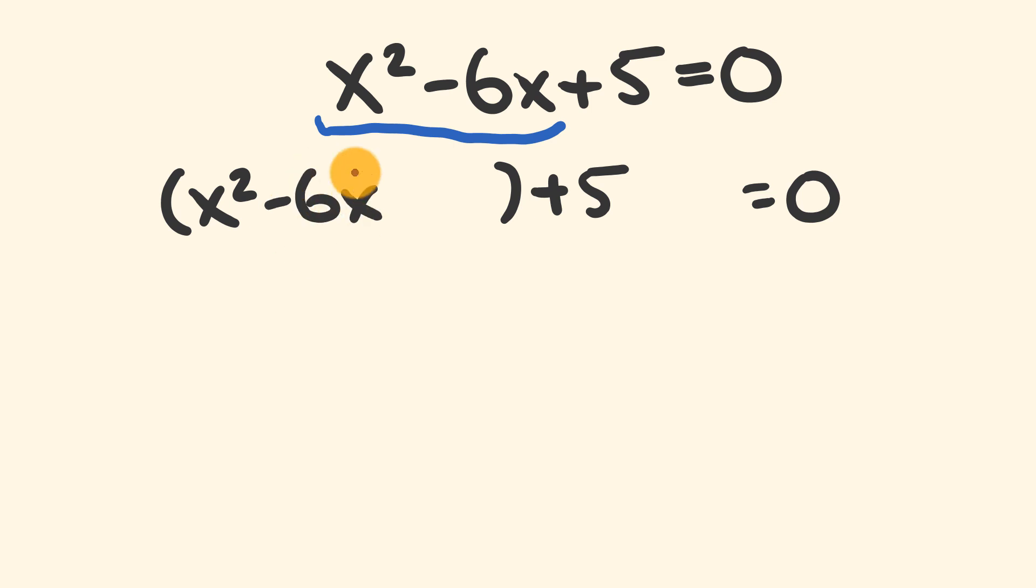Now we look at our second term, this -6x. We take that coefficient, -6, and do a couple of things to it. The first thing is we divide it by 2. -6 ÷ 2 = -3. It's worth jotting this -3 down, and we're going to use this in a bit to save ourselves some thinking later on.